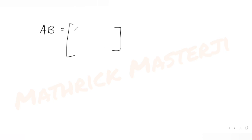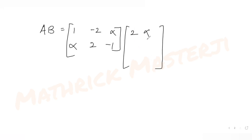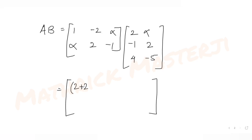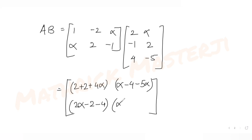Let me figure out the matrix A·B. A is [1, -2α; α, 2, -1] and B is [2α, -1; 2, 4, -5]. Computing the multiplication: the (1,1) entry is 1·2 + (-1)·(-2) = 2+2 = 4; the (1,2) entry is 1·α + (-4) + (-5α) = α - 5α - 4; the (2,1) entry is α·2 + 2·(-1) + (-1)·4 = 2α - 2 - 4; and the (2,2) entry is α·α + 2·2 + (-1)·(-5) = α² + 4 + 5.